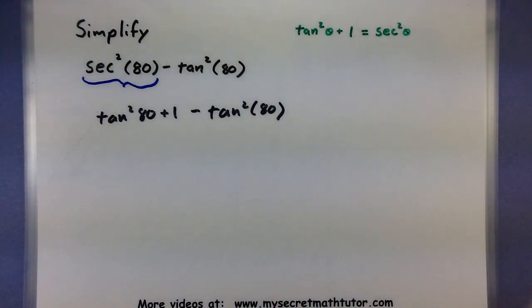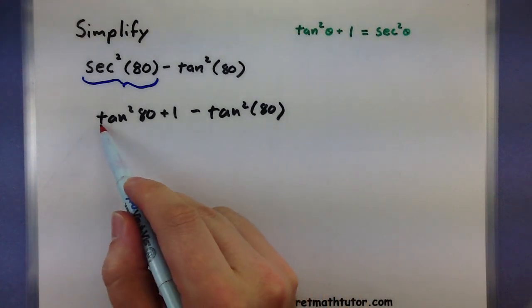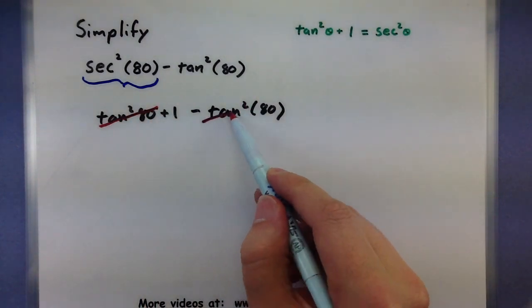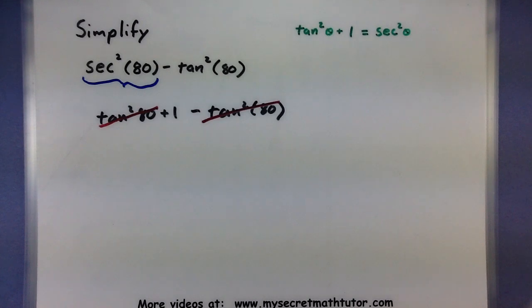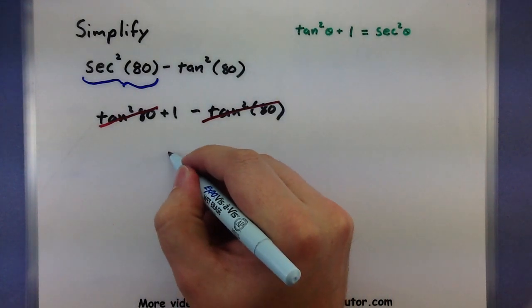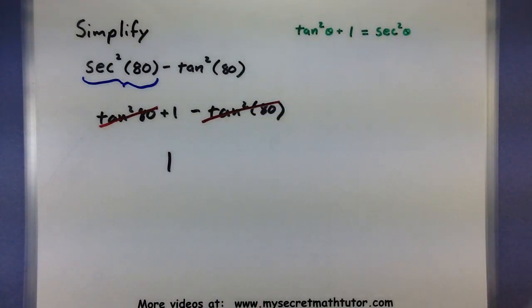Now what do I do from here? Well now that I've swapped that out, I can cancel out my tan²(80) with this minus tan²(80). And see, sure enough, the only thing left is 1. So these steps are a lot shorter, but they get us to the same spot.